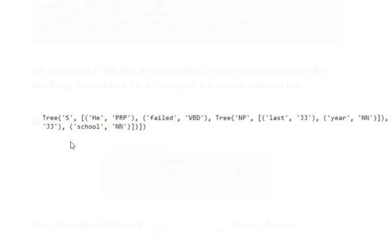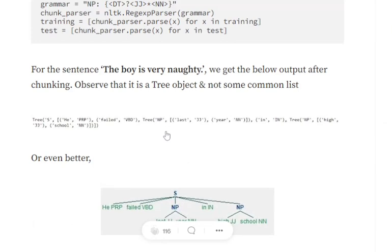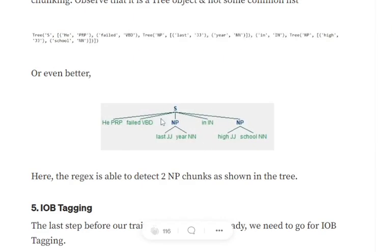Looking at the output, there are two things to note. Words that are not part of any noun phrase don't get any label in our training dataset — they are not part of any inner tree. But two noun phrases are detected: 'last year' and 'high school'. From the sentence 'he failed last year in high school', 'last year' and 'high school' are identified as noun phrases. This gives us a labeled dataset.